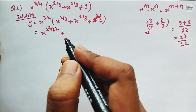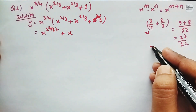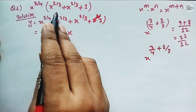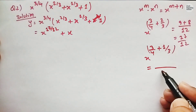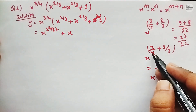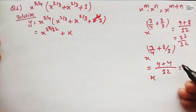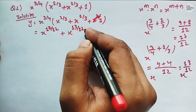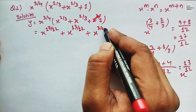Similarly, x to the power 3 by 4 times x to the power 1 by 3 gives x to the power 3/4 plus 1/3. With denominator 12, that is 9 plus 4 equals 13 upon 12, so x to the power 13 upon 12. And x to the power 3 by 4 times 1 gives x to the power 3 by 4. So y equals x to the power 17 upon 12 plus x to the power 13 upon 12 plus x to the power 3 by 4.